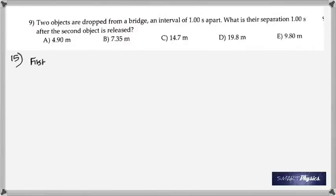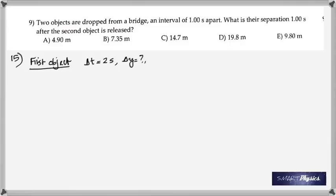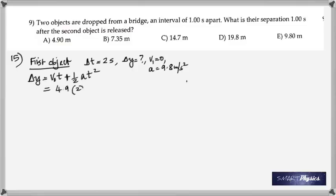Number 9: two objects are dropped from a bridge one second apart. What is the separation one second after the second object is released? The first object has been travelling for 2 seconds; initial velocity is 0, acceleration is 9.8 m/s². Using Δx = ½at², the first object has fallen 19.6 meters.